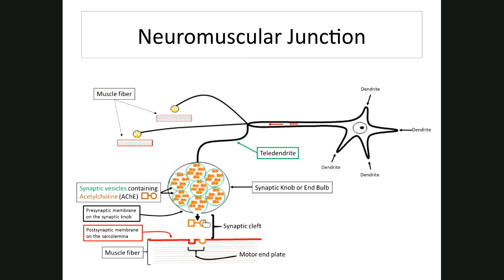Recruitment is when several motor units are used to cause an appropriate movement — just like recruiting people to help lift something. Your body recruits more motor units to stimulate more muscle fibers for a more forceful contraction. If something is heavier than expected, you call on more motor units stimulating more muscle cells to lift the object.